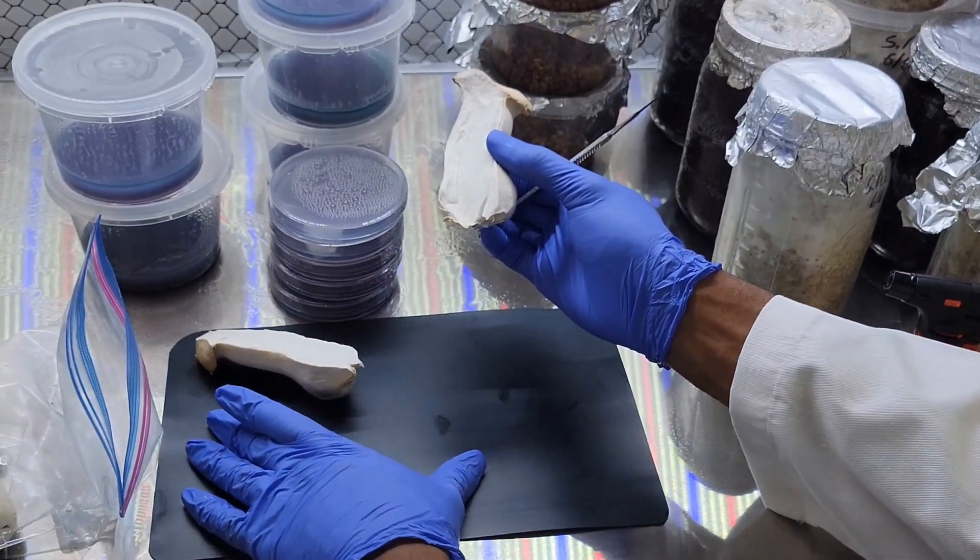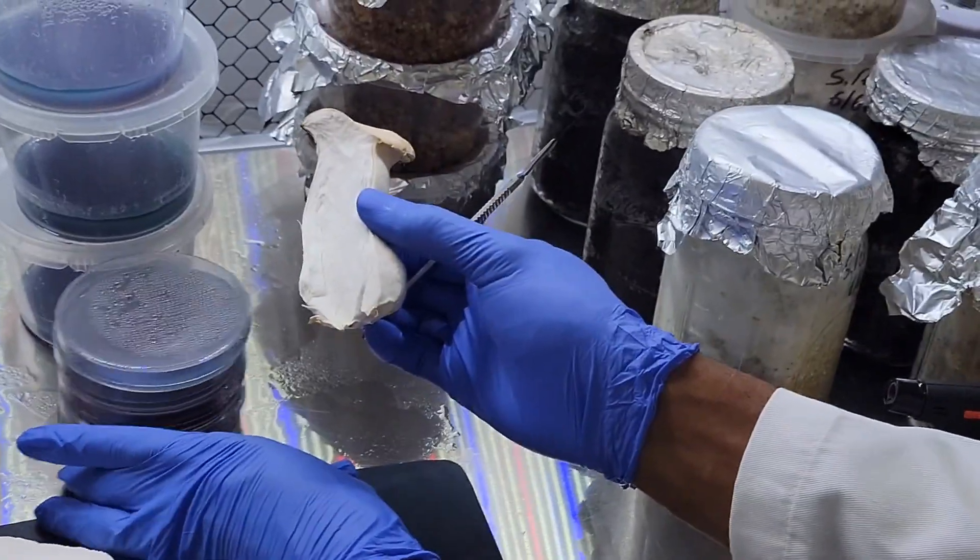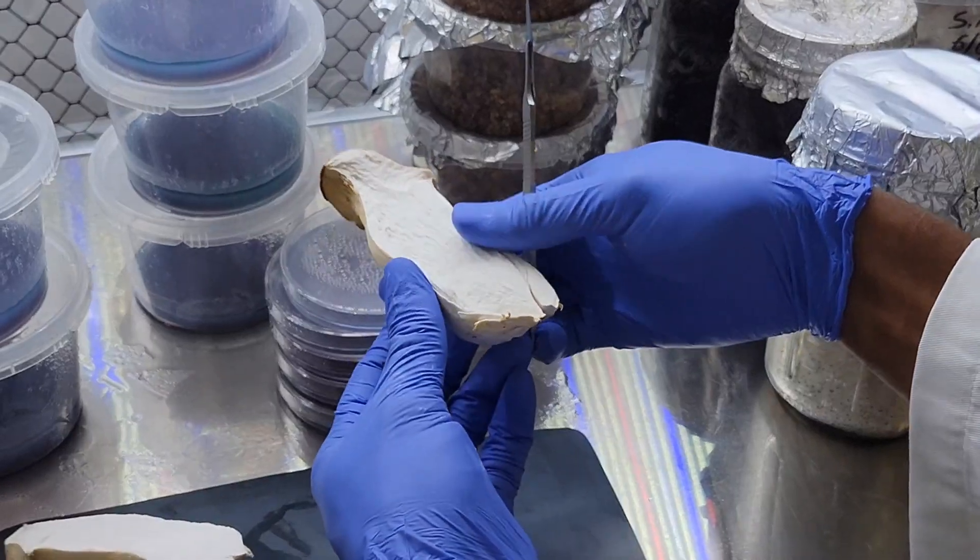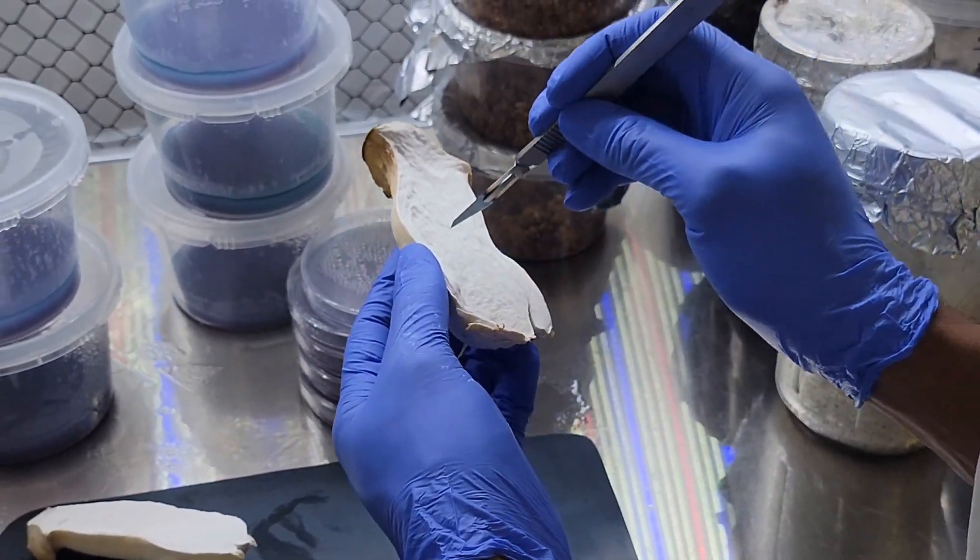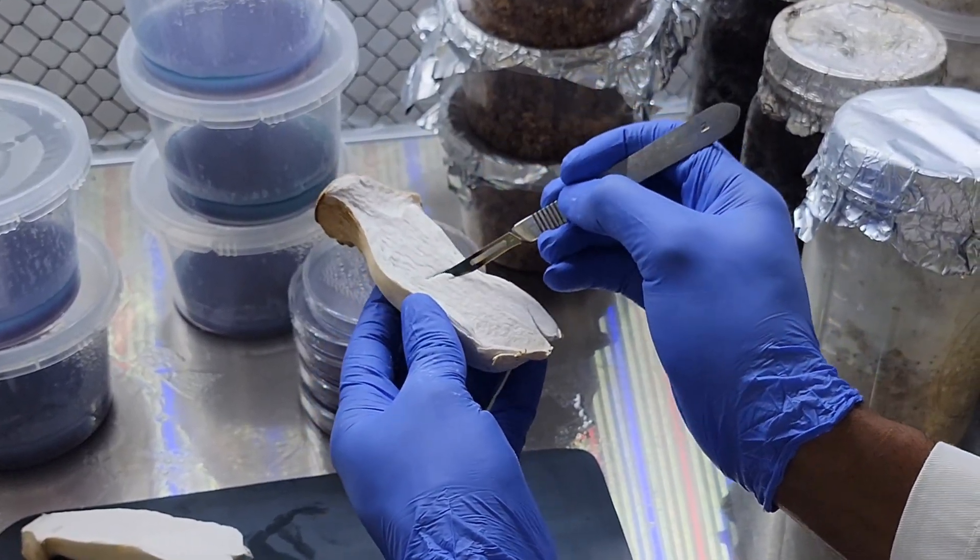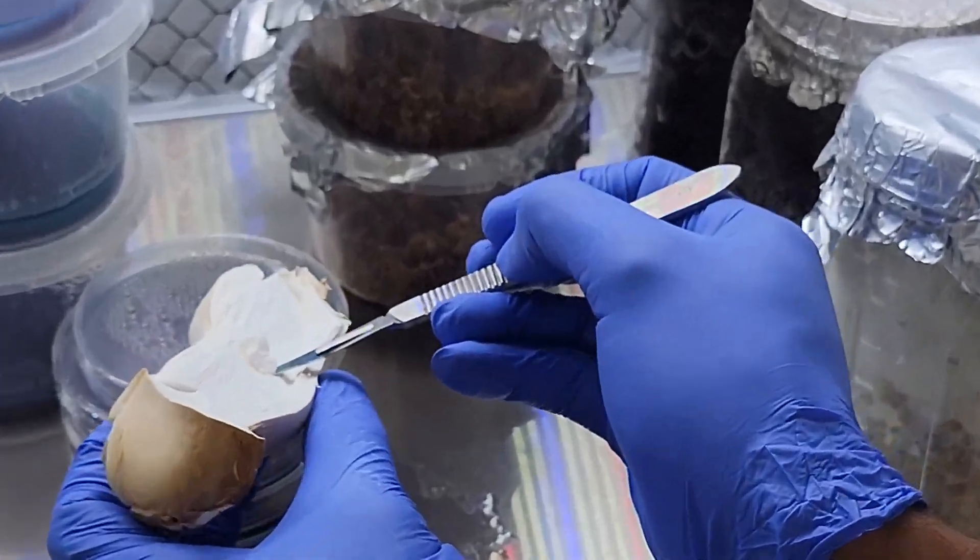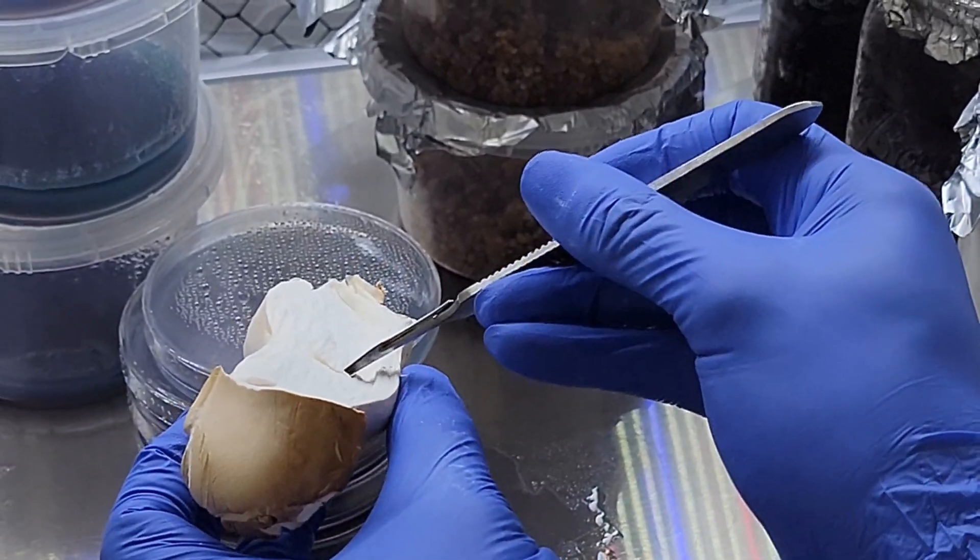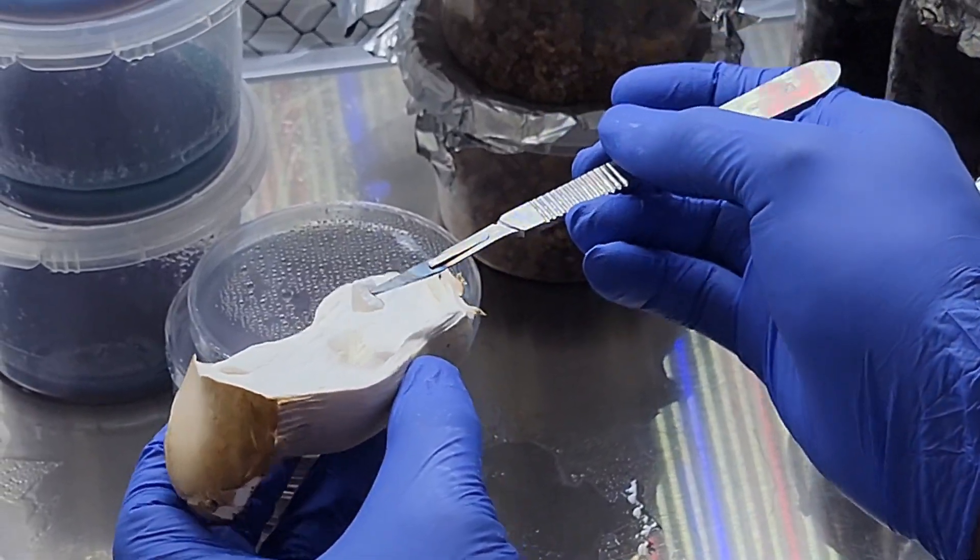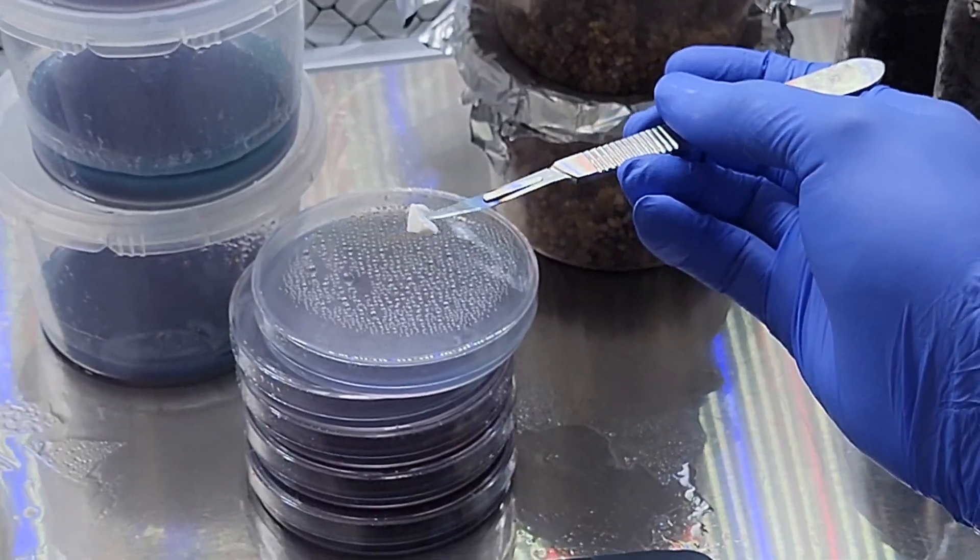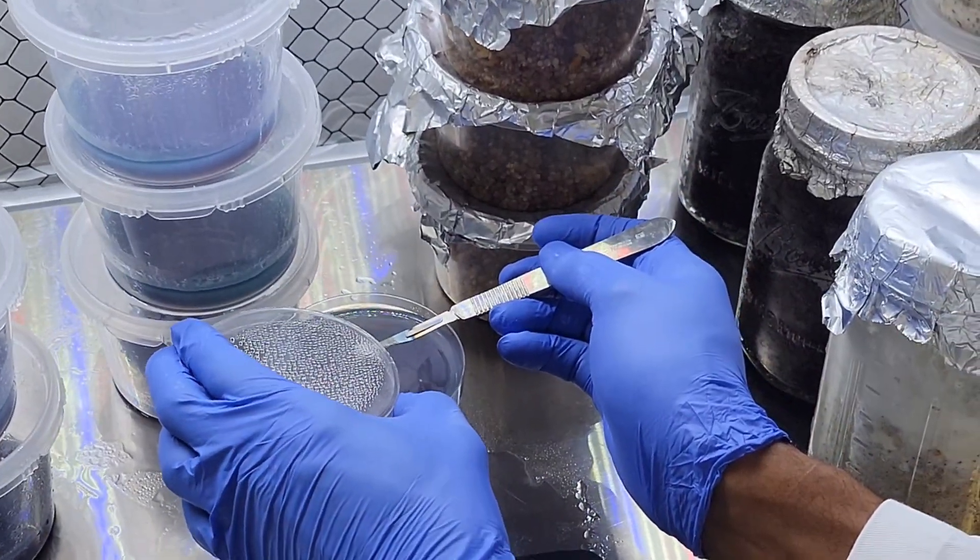So when you find a mushroom you want to bring it into sterile conditions, split it open, and then use a sterile scalpel or knife to cut a sample out from the middle. This is a lot easier with a mushroom like this because it's super meaty and there's a lot of mycelium on the inside to work with.